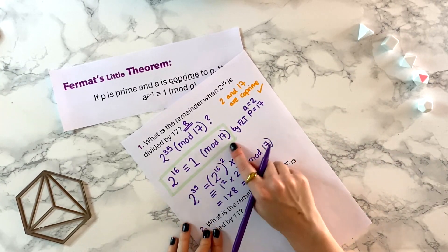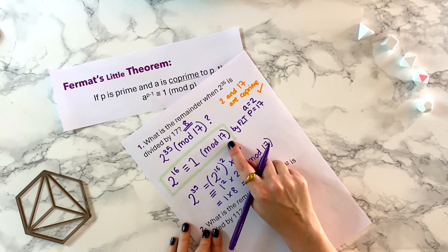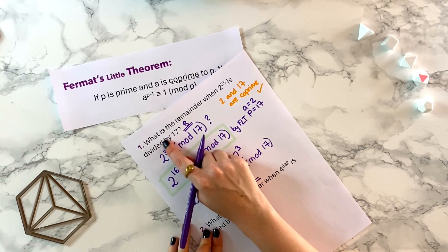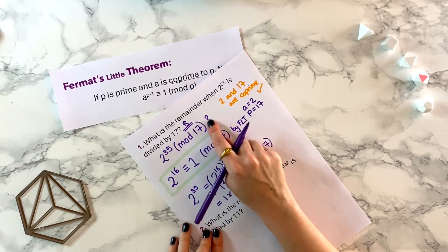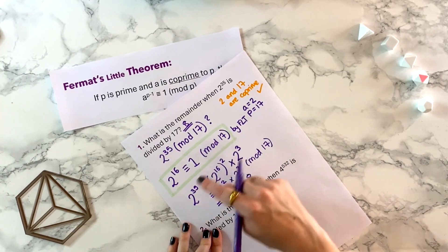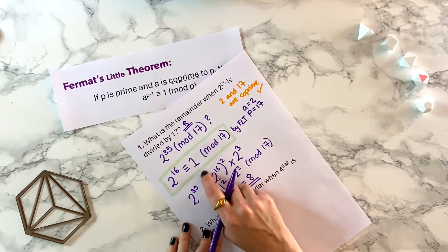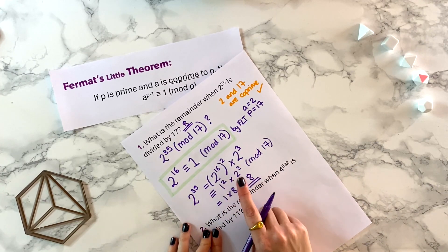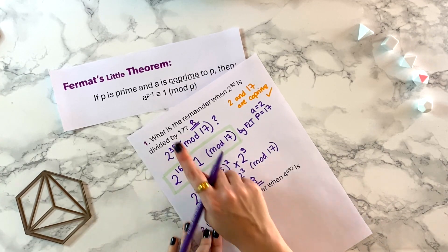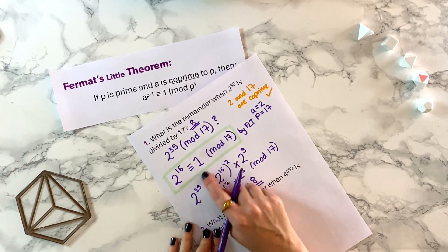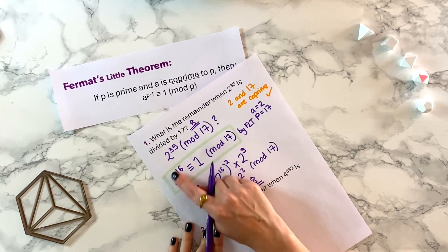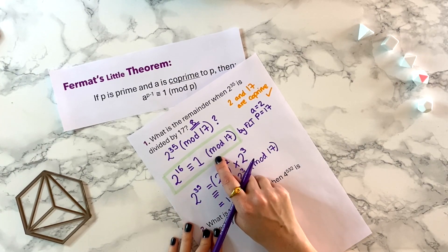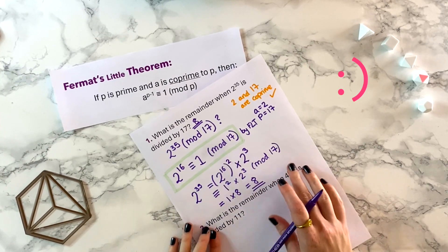Notice how this little trick sped things up hugely. When you have a power question and you're trying to reduce it modulo a certain number, you always want to find powers that give you one, because that makes multiplication much easier. Fermat's Little Theorem is just a shortcut for finding a power of a number that is congruent to one.